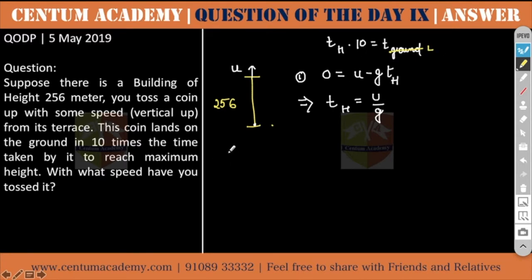So s is equal to ut minus, why? Because this displacement is done in this direction whereas initial velocity is in this direction, plus half g again t_l square.